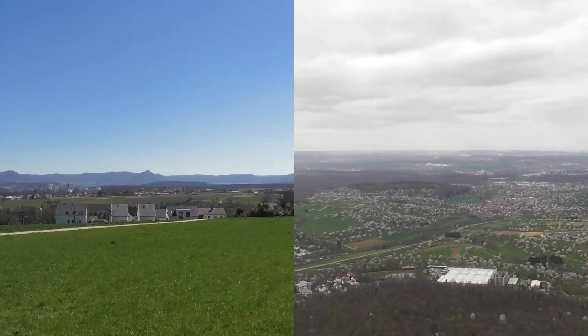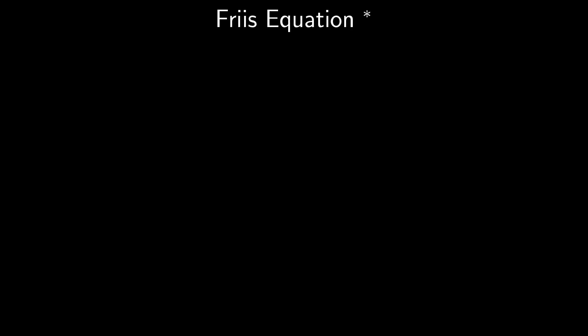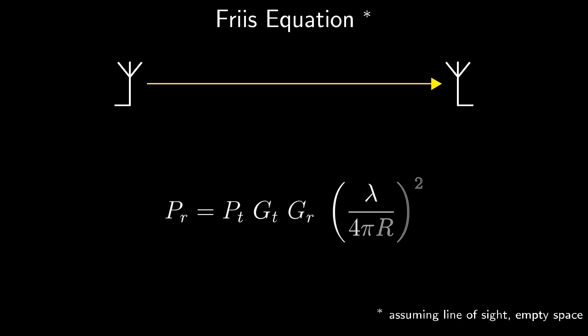Luckily, there are ways to calculate this. Let me introduce you to the Friis equation. This equation can be used to estimate the received signal strength, where lambda is the wavelength, Pt and Pr are signal powers at the transmitter and at the receiver, and Gt and Gr are their respective antenna gains. The antenna gain basically just tells us how much the antenna focuses in the main radiation direction.